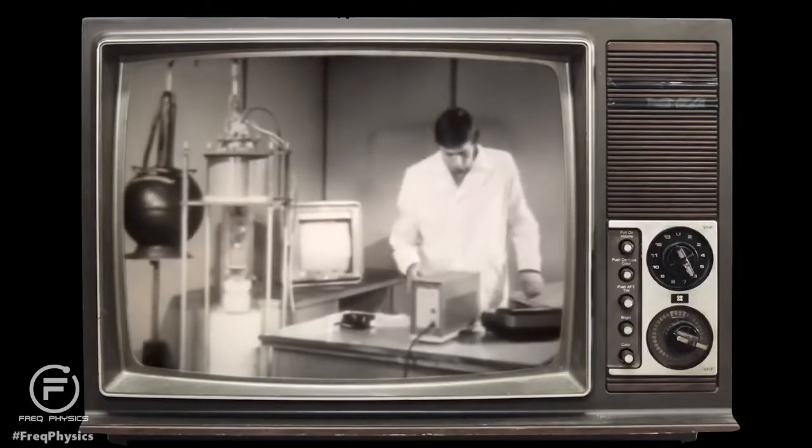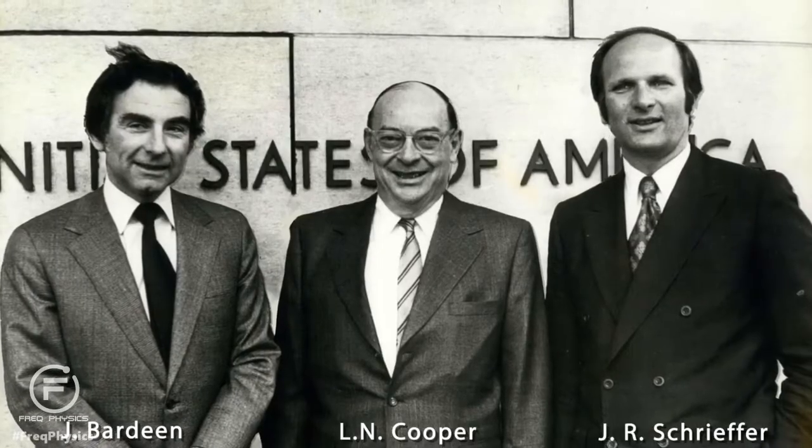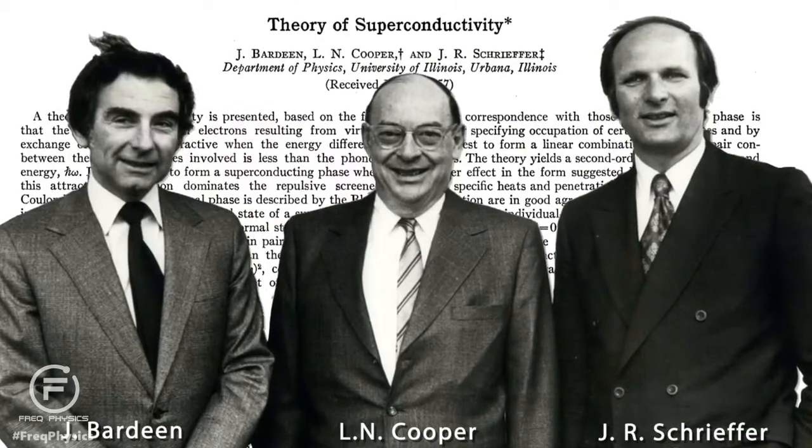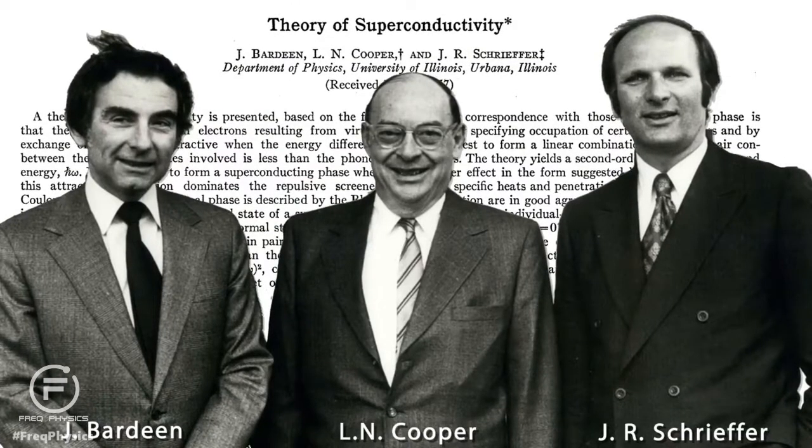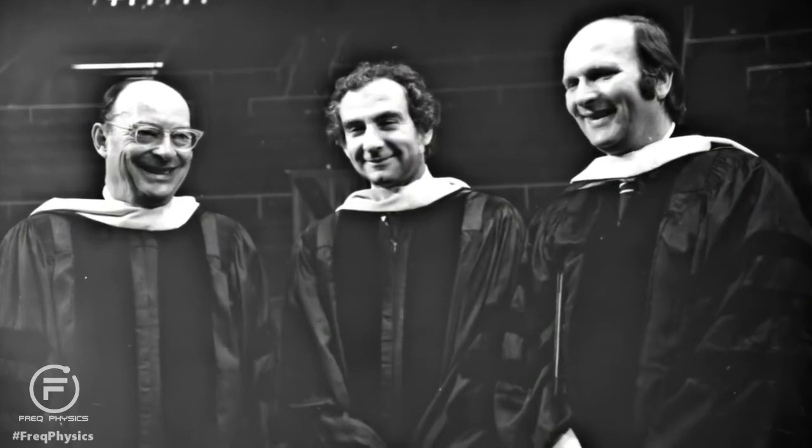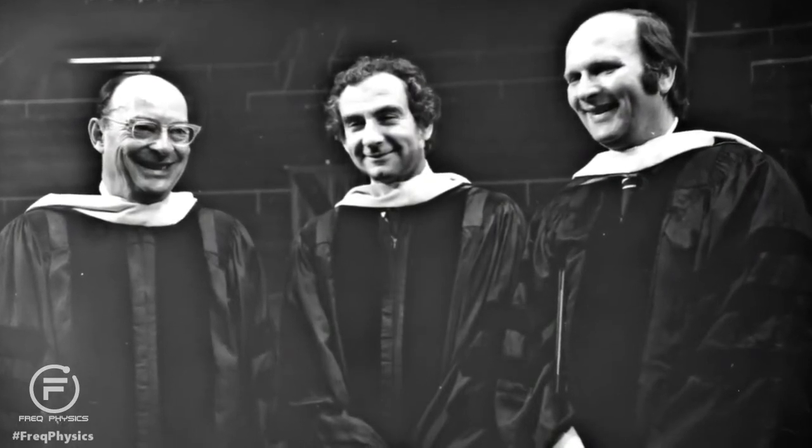In 1957, the physicists Bardeen, Cooper, and Schrieffer came up with a conceptual and mathematical foundation for conventional superconductivity, known as Bardeen-Cooper-Schrieffer theory, which they later received the Nobel Prize for in 1972.